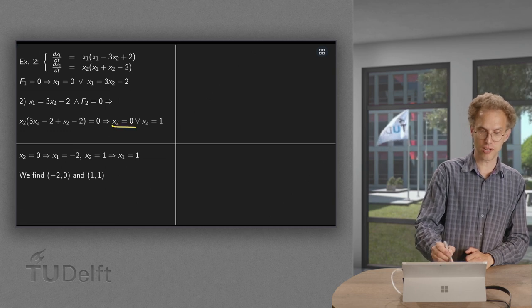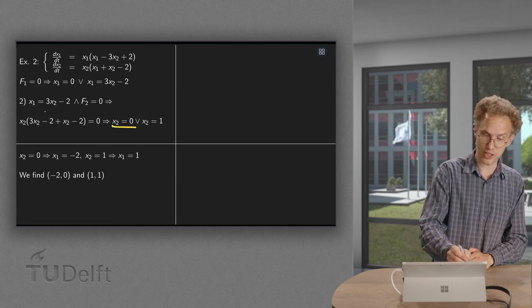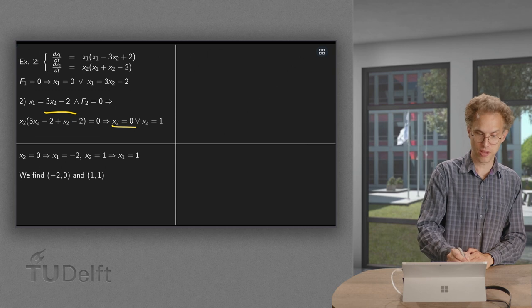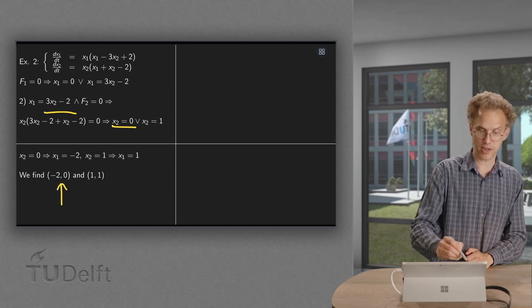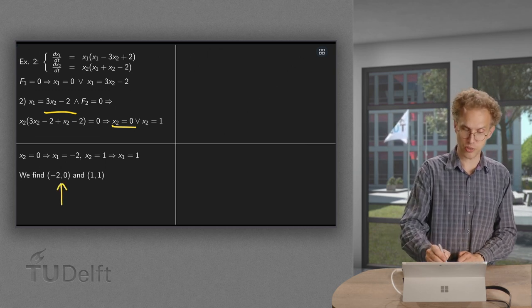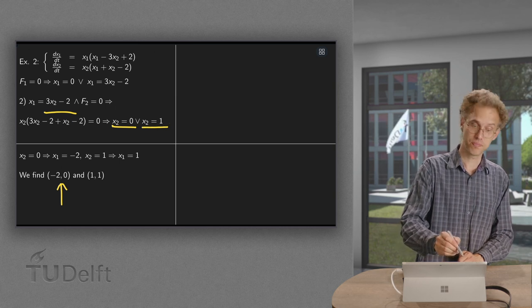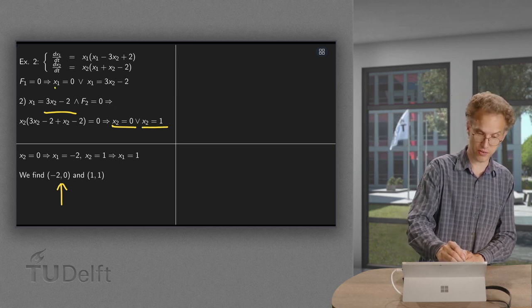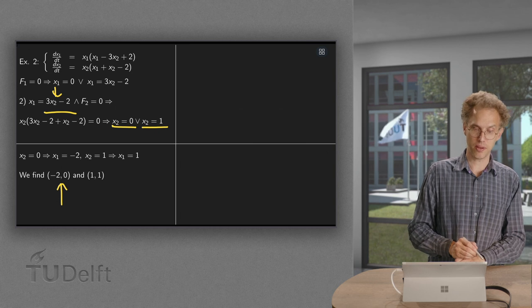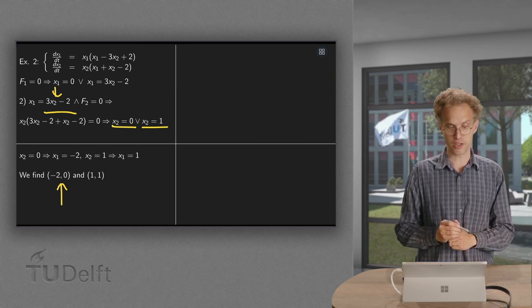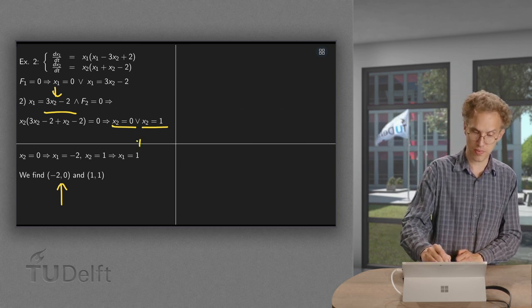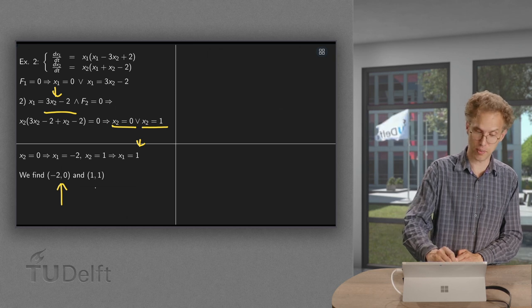Well, if x2 equals zero, then x1 equals minus two. So we find the equilibrium point (-2, 0). And if x2 equals one, we find x1 again by computing three minus two, which now equals one. So we find our second equilibrium point, (1, 1).